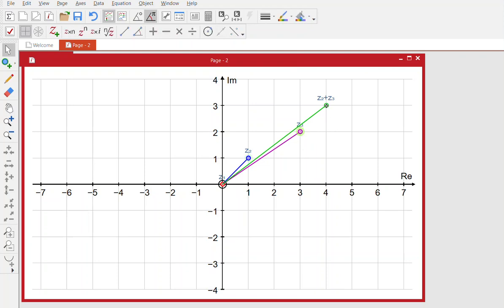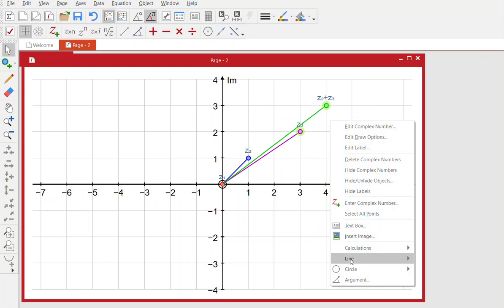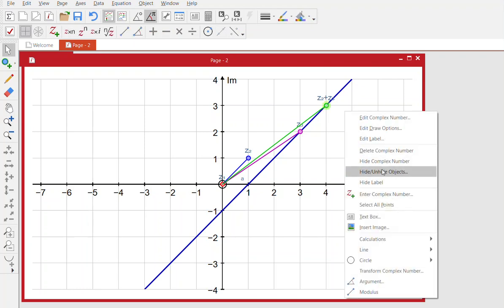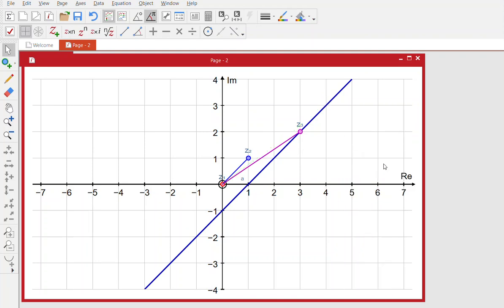Now I'm going to join those together with a line, so if I select them and put in a straight line. So this will be the direction and the position of my line. Now I don't actually need this z2 plus z3 anymore, so if I select it and I'm going to hide the complex number there, so that's disappeared.